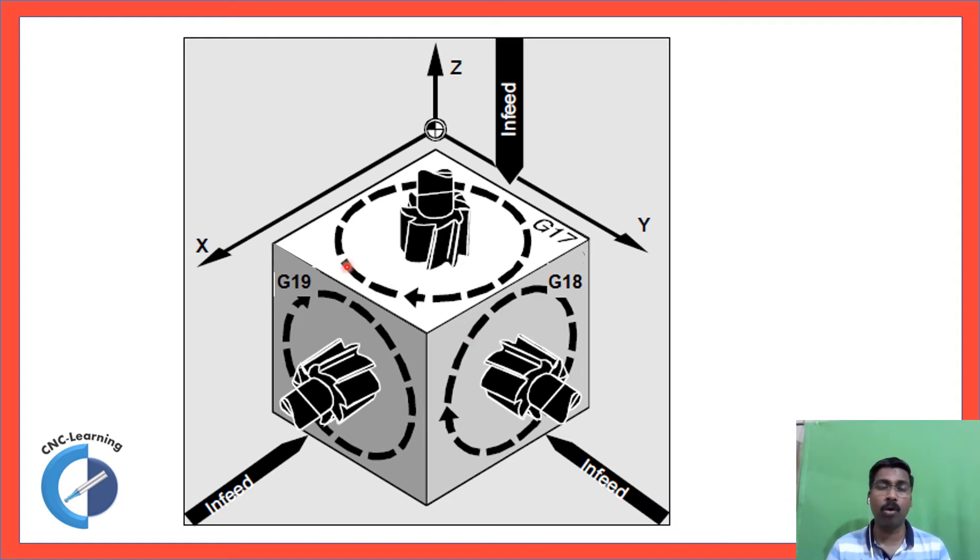So let's look at how the plane selection. Now, for a better understanding, the axis is shown like this, because we need to show the infeed axis. This is X, this is Y, and this is Z axis. So this is as if you look from behind the VMC machine, the operator will be standing here. So in such case, your regular axis system, your infeed will be Z axis. So your circular interpolation will be like this. Infeed is Z axis. So the code will be G17.